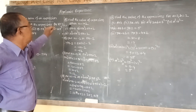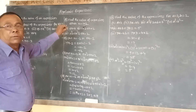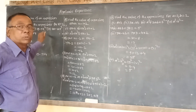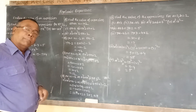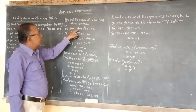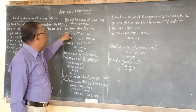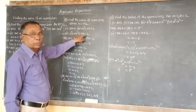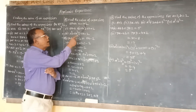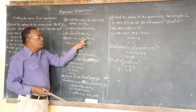Now we will see the second question: find the value of the expression when n is equal to minus 2. Here the value of the variable is negative. The first expression is 6n minus 2, the second is 5n squared plus 5n plus 2, and the third is n cubed plus 5n squared plus 5n minus 2. We have to substitute n equal to minus 2 in each expression.